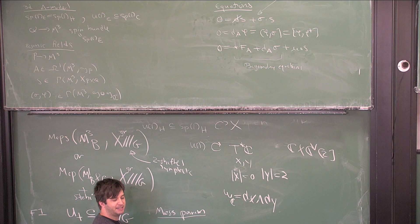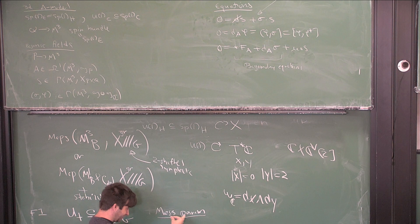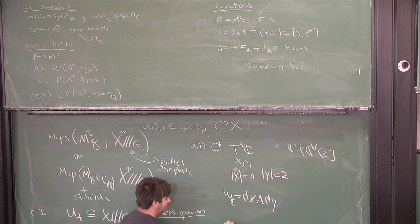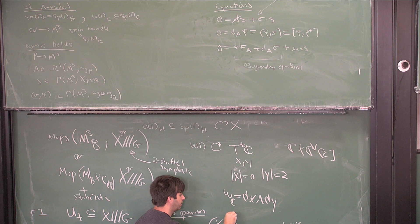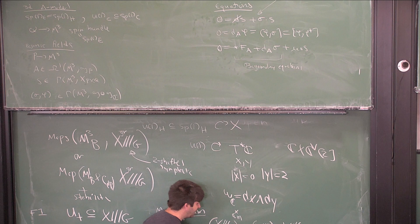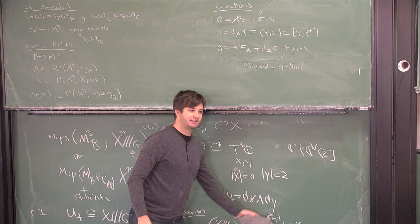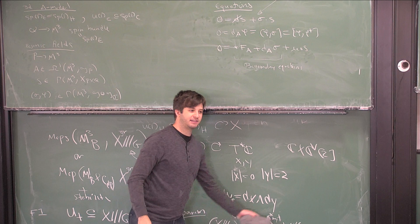The FI parameter determines a stability condition on X mod G — it picks out some open subset, and I ask for things to generically live in that open subset. The mass parameter is more interesting. Assuming t is integral — to convert to GIT you need a rational t, so let me assume it's an integer — and similarly m is integral, so it's a C* action. The mass parameter gives me a way to look at X mod G and look at fixed points under my flavor symmetry for the chosen U(1), and there's an attracting set correspondence.